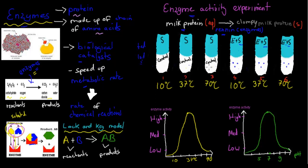Because the control test tubes have no enzyme, we don't expect much to happen. When the enzyme is present, the test tubes will become clumpy, because renin breaks down that milk protein making it clump together. We're not expecting anything in the first three test tubes, but we do expect something in the other three. What we're going to find is more happening in the middle one — at 37 degrees Celsius — with much of the milk going clumpy, whereas less clumping occurs at 10 degrees and at 7 degrees Celsius.